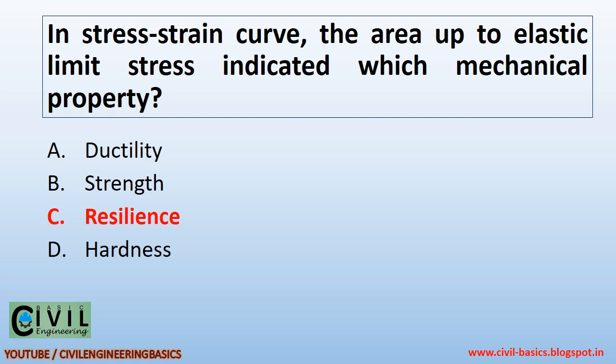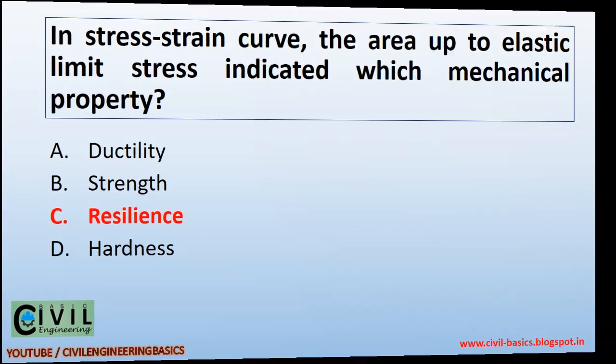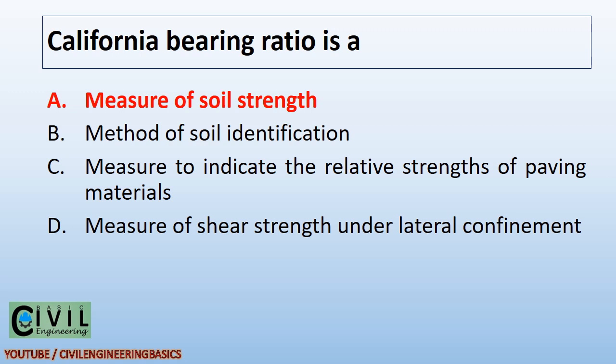In a stress-strain curve, the area up to elastic limit stress indicates which mechanical property? Resilience indicates the area up to elastic limit stress in a stress-strain curve. California bearing ratio (CBR) is a measure of soil strength.